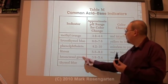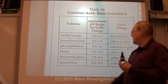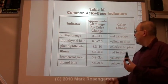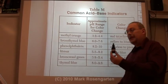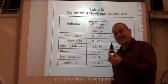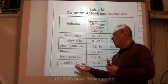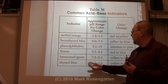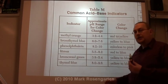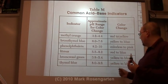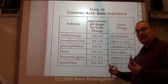Bromcresol green from 3.8 on down is yellow, from 5.4 on up is blue, and in the middle it's green. Finally, there's thymol blue: at a pH of 8.0 or under it's yellow, at a pH of 9.6 or higher it's blue, and in the middle it's green.